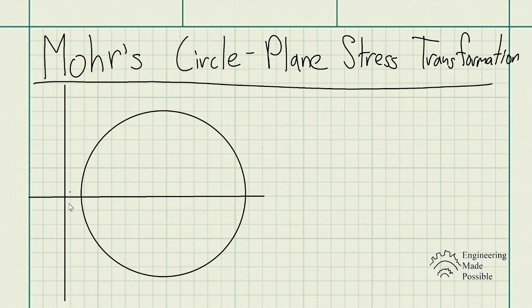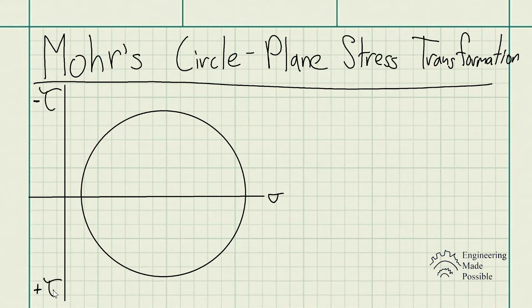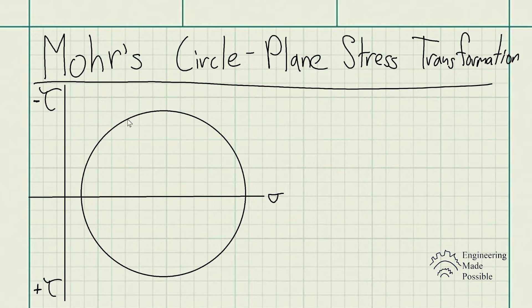Here we have a graph with two axes. The horizontal axis represents normal stress, while the vertical axis represents shear stress. One important thing to be aware of: the shear stress axis is actually inverted — the bottom of the axis is positive and the top portion is negative.